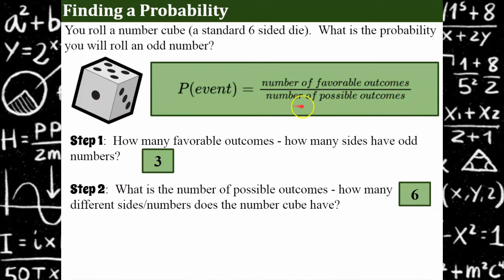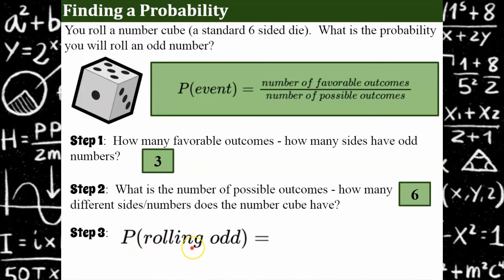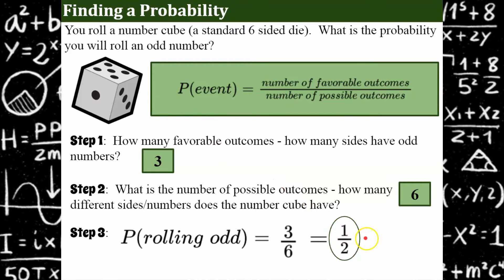There are six outcomes when we roll a number cube, but we're looking for an odd. There are three favorable outcomes because there are three odd sides. So the probability of rolling an odd is three out of six. We always simplify, and that would be one half — written as a decimal, 0.5, and as a percent, 50%. You can answer with a fraction, decimal, or percent depending on your teacher or how the question is written.